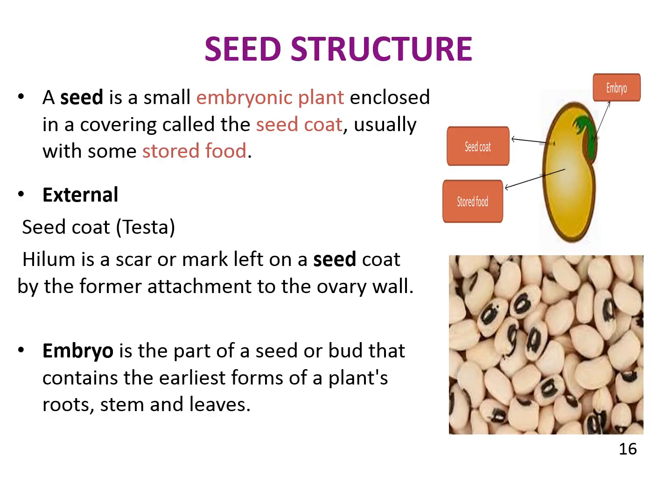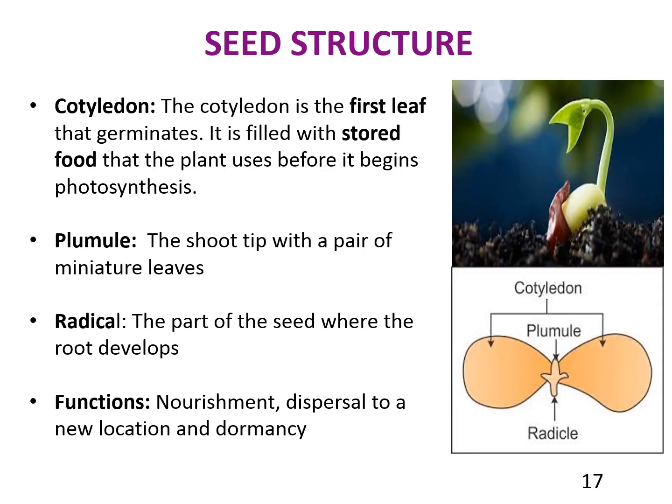A seed is a small embryonic plant enclosed in a covering called the seed coat, usually with stored food. The external part of the seed is called the seed coat, also called the testa. On the seed you can see the hilum, which is a scar or mark left on the seed coat about the point of former attachment to the ovary wall — also called the eye of the bean. The embryo is the part of the seed that contains the earliest form of the plant's root, stem, and leaf.